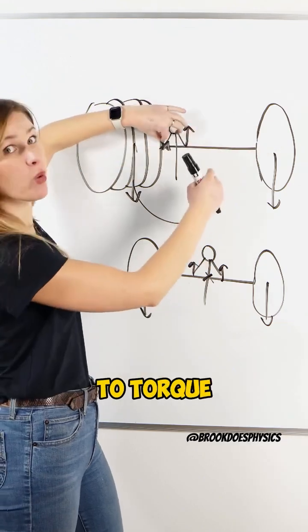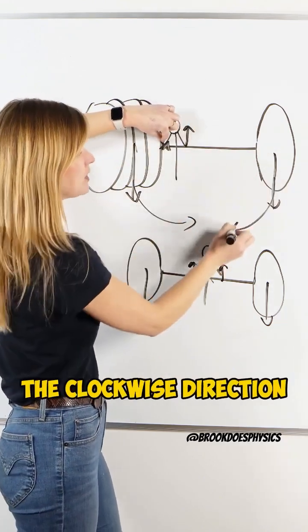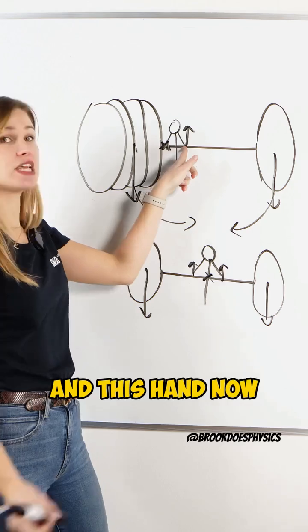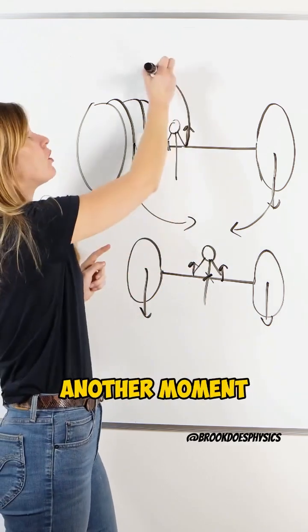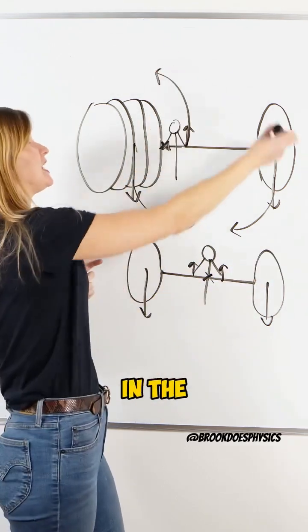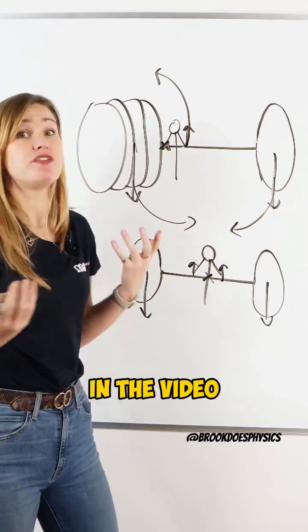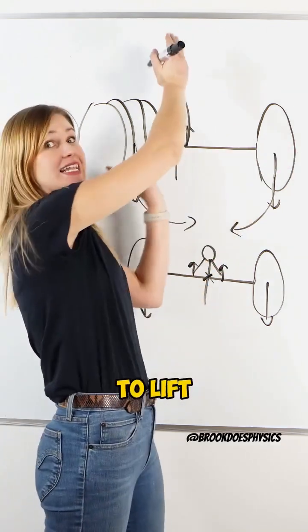This weight is going to provide a torque trying to pull it round in the clockwise direction. And this hand is also going to apply another torque, another moment trying to pull it round in the anti-clockwise direction. Which is why in the video we see this side of the weight start to lift.